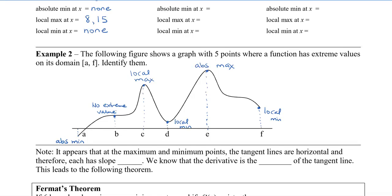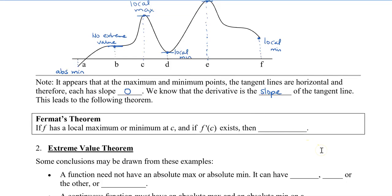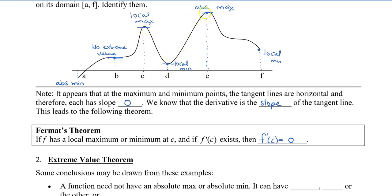It's important to notice where all the maximum and minimum occur — the tangent lines are horizontal. So there's a horizontal tangent at those points. We know that the derivative is the slope of the tangent line, and it seems like all the slopes are zero at those extreme points. This leads to Fermat's theorem, which states that if f has a local maximum or minimum at a point c, and the derivative exists there, then the derivative at that local max or min is equal to zero.